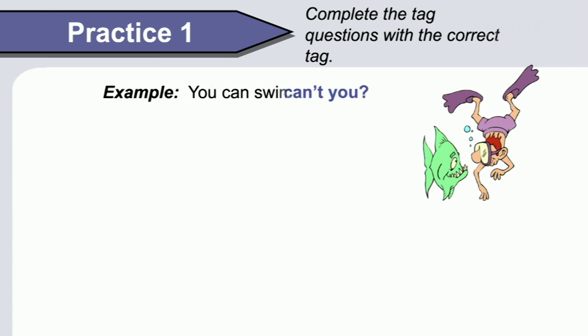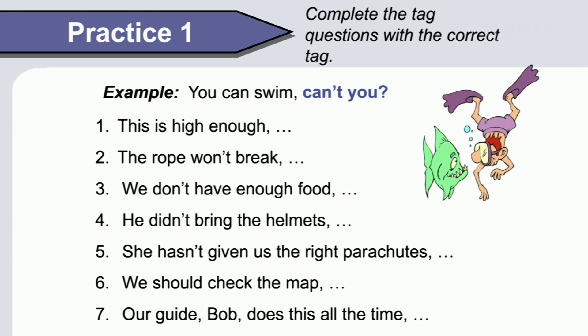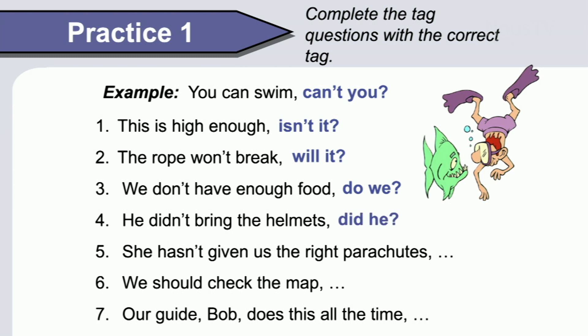Complete the tag questions with the correct tag. You can swim, can't you? This is high enough, isn't it? The answers reviewed: will — won't; do — don't; did — didn't; has — hasn't; should — shouldn't; does — doesn't. Bob does this all the time, doesn't he? And this is our final PowerPoint. I hope that you have appreciated what we have been learning here about yes-no questions and tag questions. Now go on to the practical part with the student.